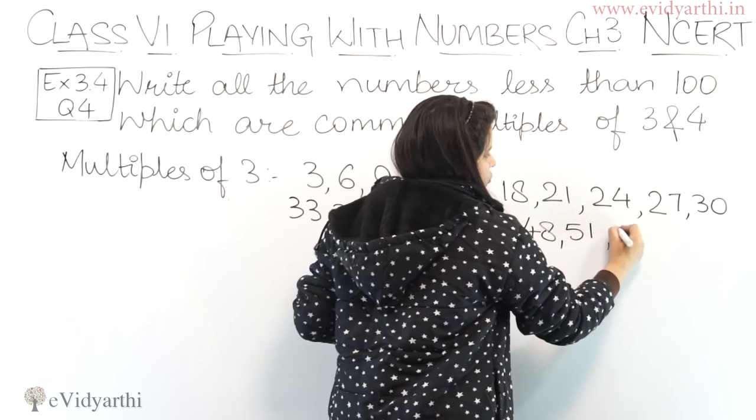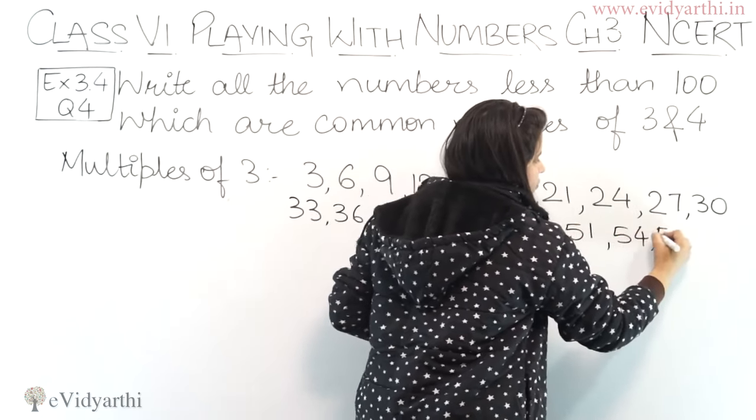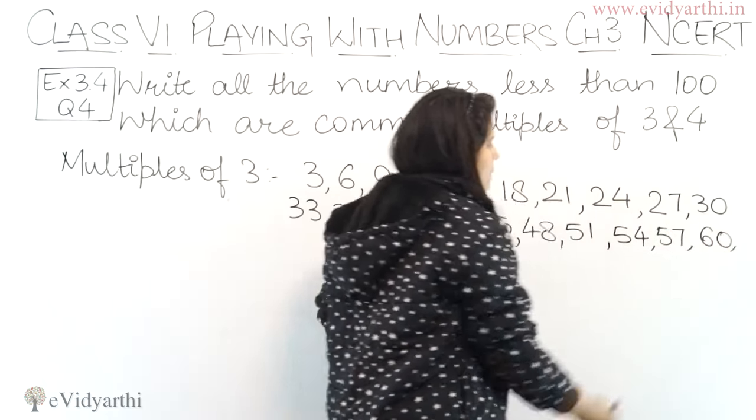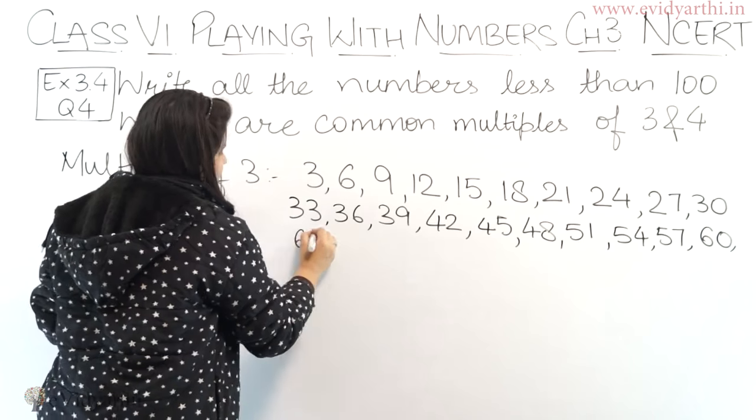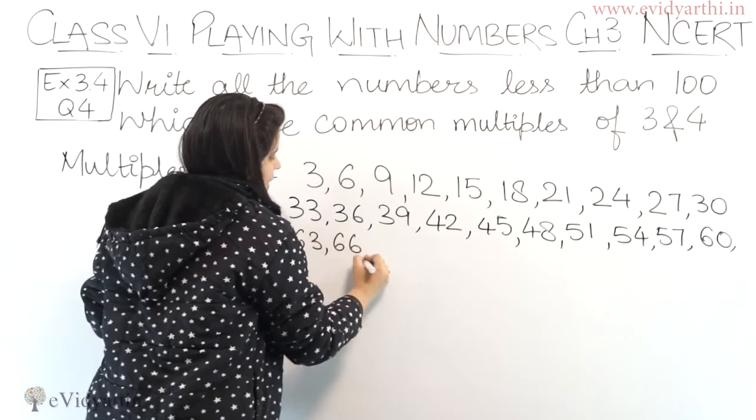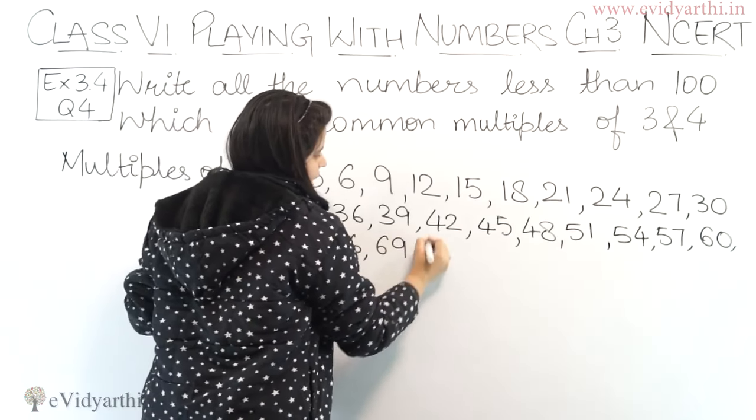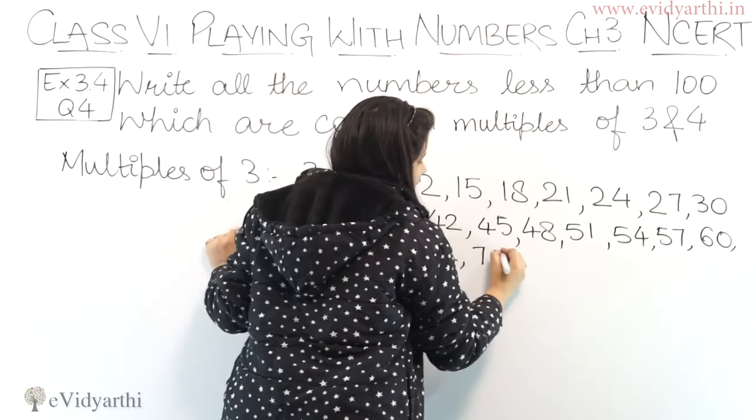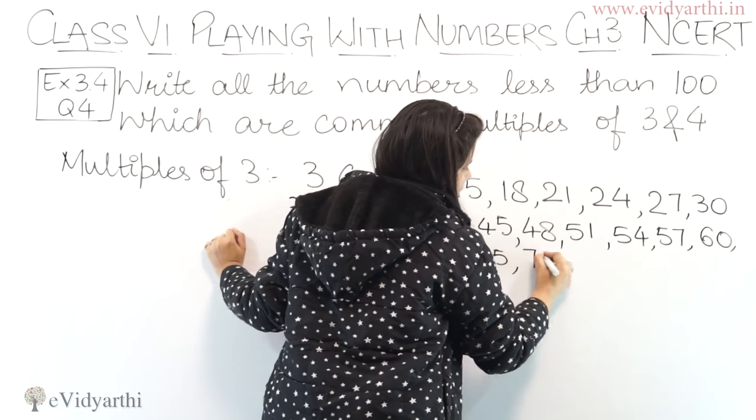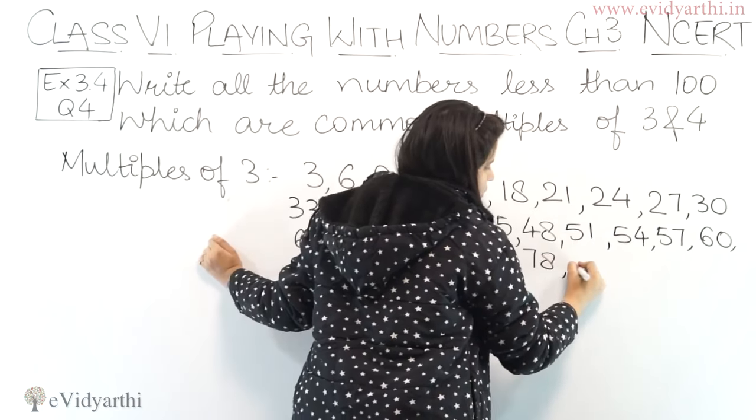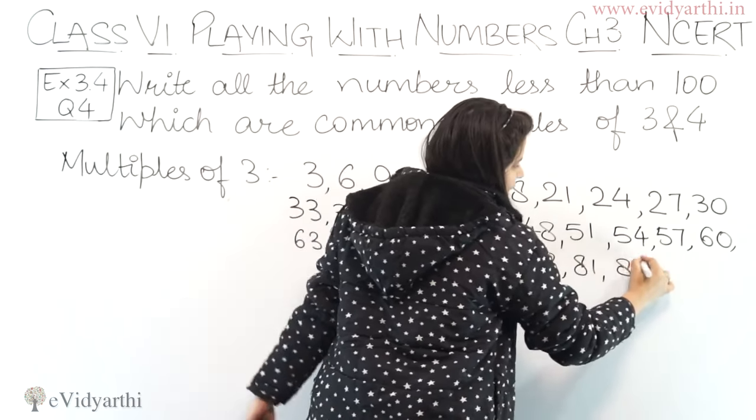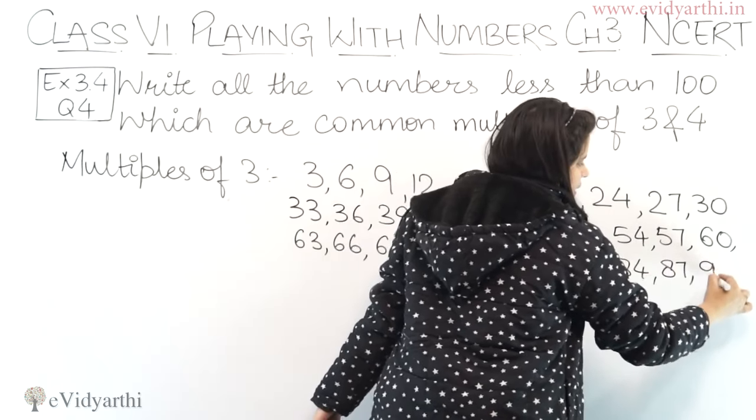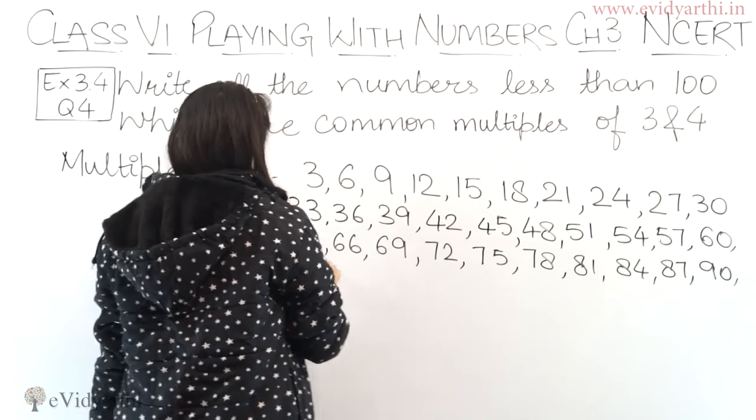Then 60. After 60, 63, 66, 69 and then this is 72, 75 then 78. Again one number will increase, so this will be 81, 84, 87 and then 90.